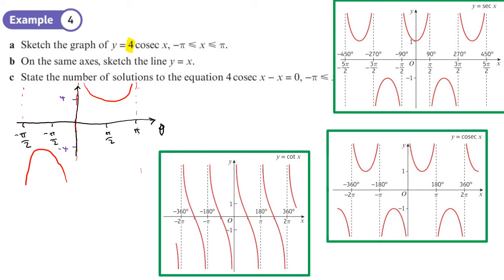On the same axes, sketch the line y equals x. When x is pi, y is pi, and when x is minus pi, y is minus pi — so it's a straight line through the origin where x and y coordinates are equal. The number of solutions to 4cosec theta equals theta is the number of intersections. Since the lines do not intersect, there are no solutions.